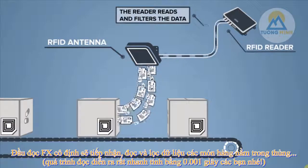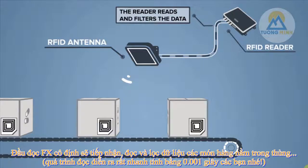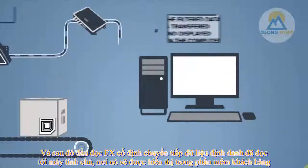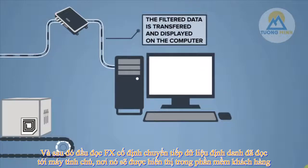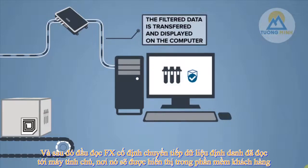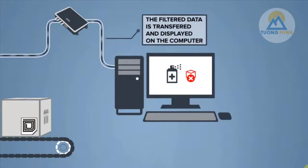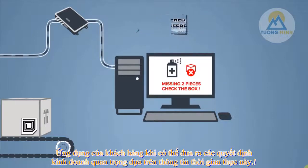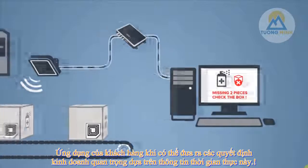The reader reads and filters the data, and then forwards the filtered data to a host computer, where it is displayed in the end-user software application. Customers can make critical business decisions based on this real-time information.